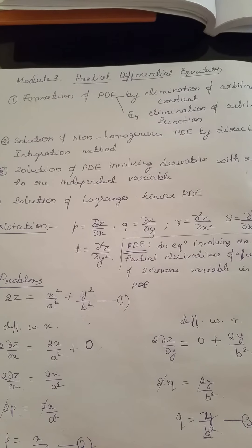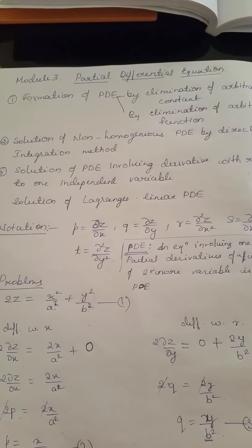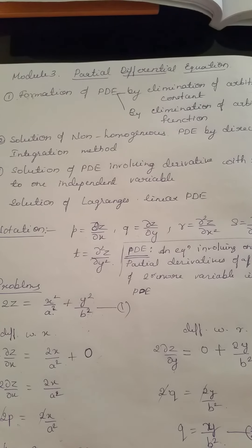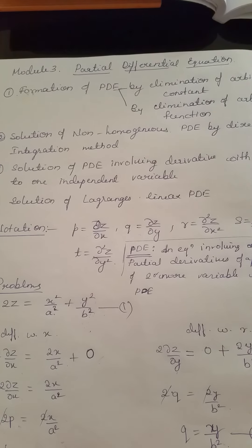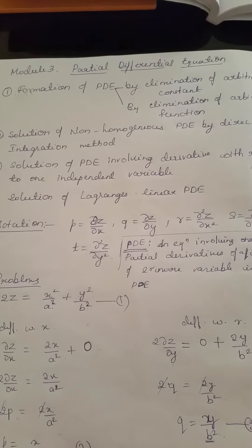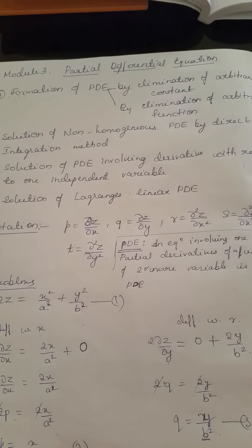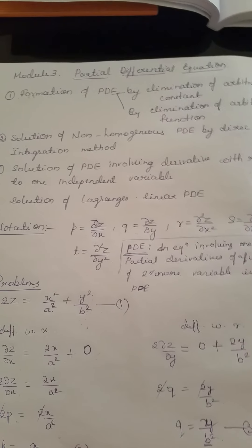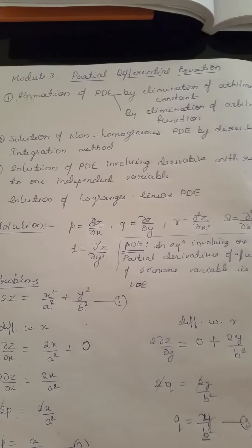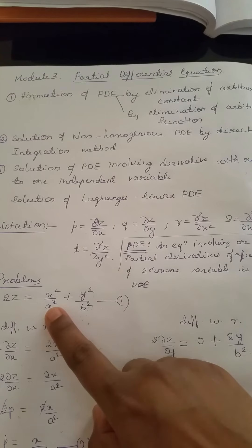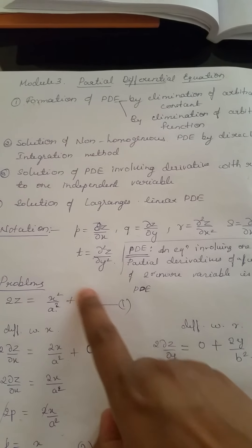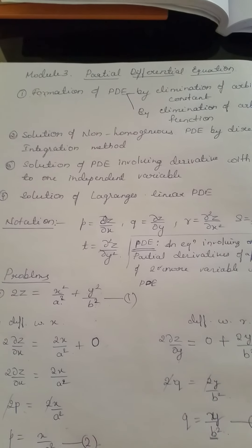If the number of arbitrary constants to be eliminated is more than the number of independent variables, then we get a higher-order partial differential equation. Here we have only two arbitrary constants, a and b, and two independent variables.